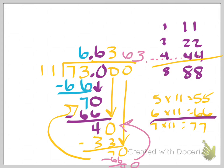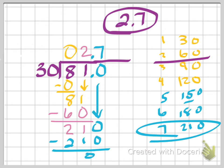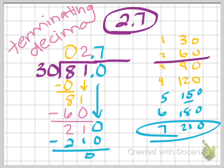So the way that we write that is 6.63, and we draw a line over the 6 and the 3 because that's what's repeating — 6, 3, 6, 3, 6, 3. This is what we call a repeating decimal. Now with that in mind, I want to look back at the previous example where we got 2.7 and received a 0 remainder. This is called a terminating decimal — meaning we did have to start using decimals, but it terminates because it gets that 0 remainder that we've always been wanting.